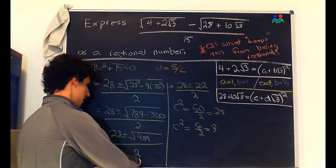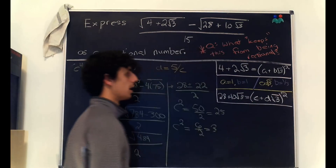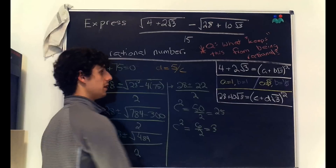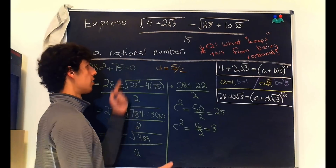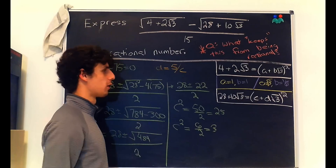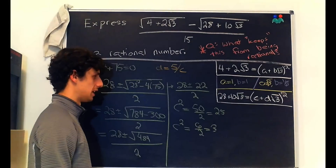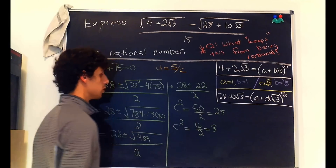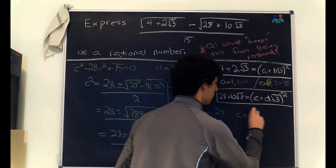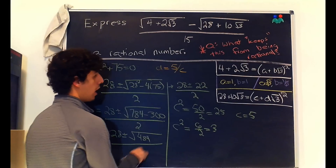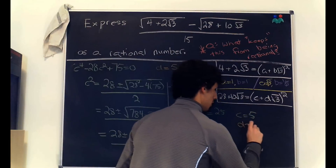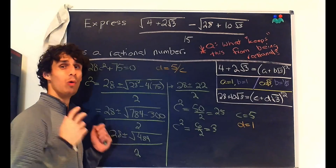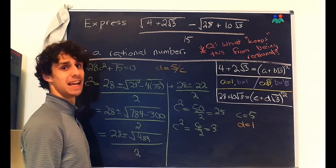I want to point out that taking c squared equals 3 gives c equals the square root of 3, which would introduce more radicals — exactly what we're trying to eliminate. So the solution we want is c squared equals 25, giving c equals 5. That also gives d equals 1 from the equation cd equals 5. Similarly, for a and b, the only rational solutions are a equals 1 and b equals 1.